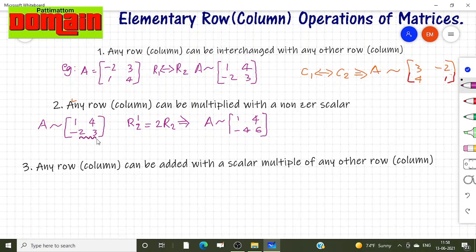[-4, 6] is given by multiplying this second row with 2. Then we proceed to understand what is the third property or third transformation allowed. Any row can be added with a scalar multiple of any other row. Similarly any column can be added with a scalar multiple of any other column.